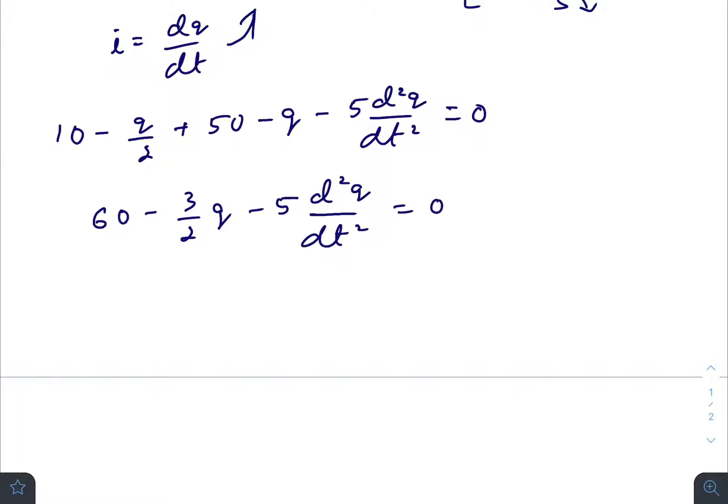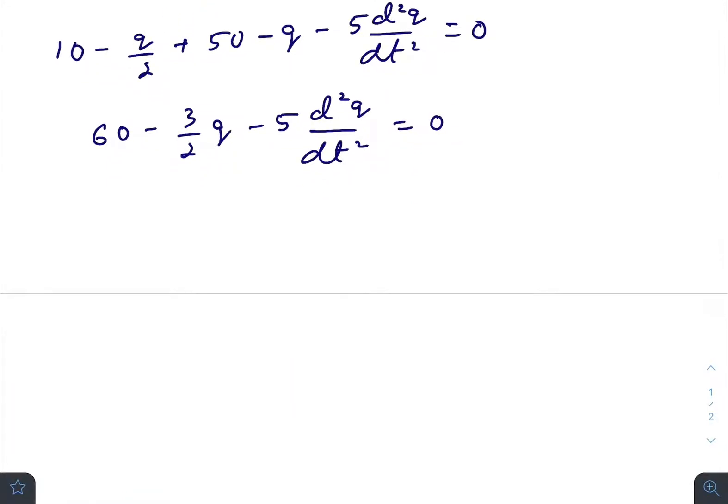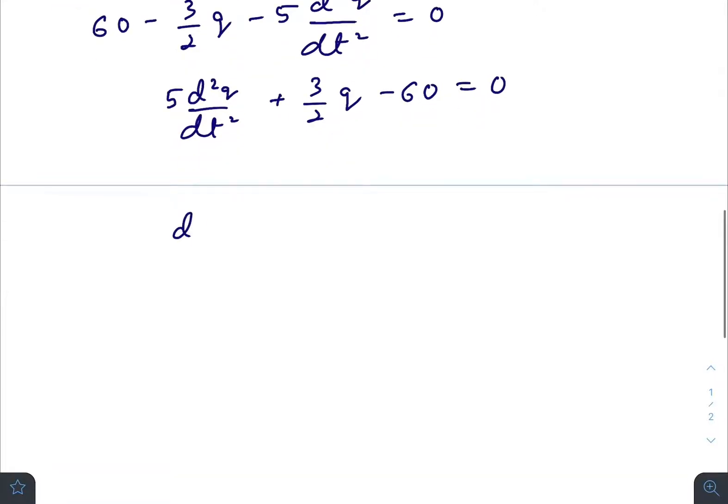If we rearrange this differential equation, we have d²q/dt² plus 3/2 q minus 60 equals zero. Then d²q/dt² plus, taking 3/2 common and dividing both sides by 5, we get d²q/dt² plus 3/10 (q minus 40) equals zero.